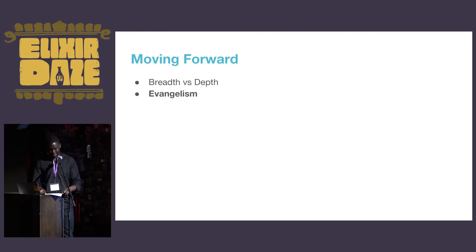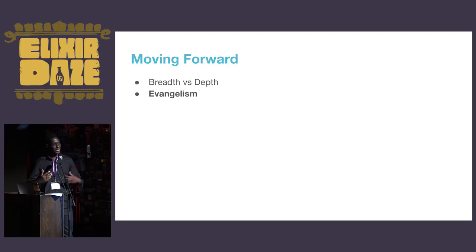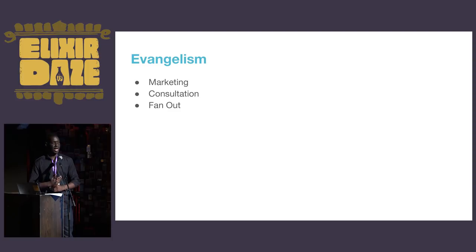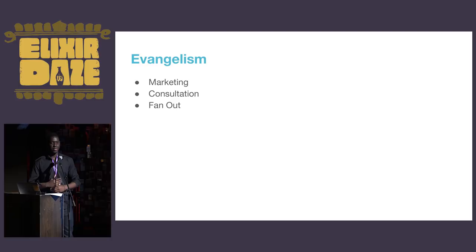The second axis that matters in moving forward is evangelism. Evangelism is particularly tough because we're all engineers and builders — we think of ourselves as thinkers, not speakers. But when we look at Java and JavaScript, there was a massive marketing push in the 90s and 2000s for these languages to become the de facto standard — and they did. There's work to be done in our communities to market our language.